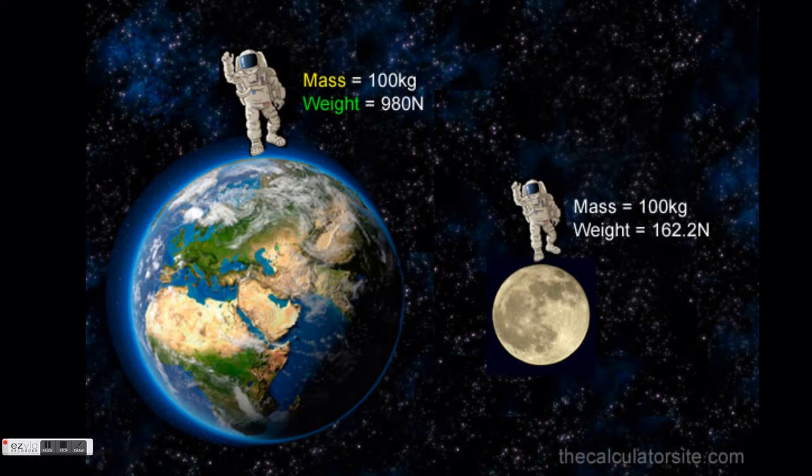Mass and weight are two different values. While mass is a measure of the amount of matter in an object, weight is a measure of the effect of gravity on an object. Weight will change as gravity changes, but mass will remain the same regardless of gravity.